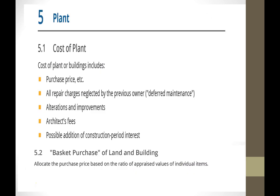The cost of the plant or building includes the purchase price. Importantly, any repairs neglected by previous owners are part of the original cost — if you have to spend money to make the building structurally sound because the prior owner neglected maintenance, that's capitalized. Architectural fees and construction-period interest are also included, and we'll discuss construction-period interest shortly.